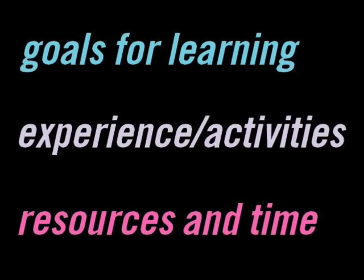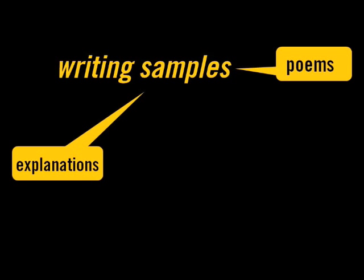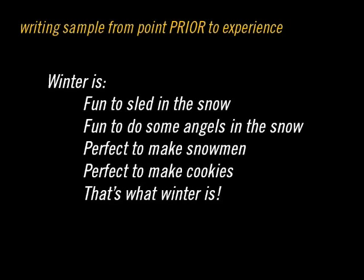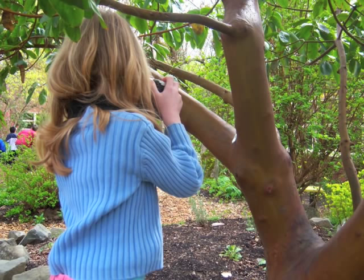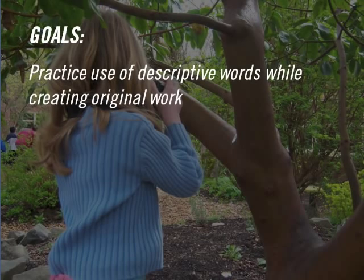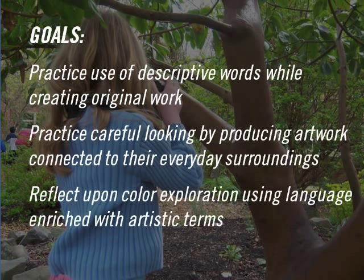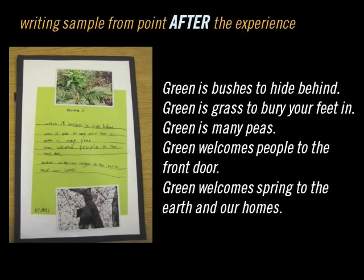Here are some examples of the type of student work that can be collected. Writing samples are good to consider in light of the goals for improving literacy skills. These can be poems, written explanations or directions, creative writing, and so on. This is an example of a writing sample from a point prior to the arts experience — the classroom teacher had students writing poetry about the seasons. A photographer then joined the class to take photographs from various perspectives, like bird's eye view and snake's eye view. Some goals for this residency were that students would practice descriptive words, careful looking, and reflect upon color exploration using language enriched with artistic terms. This is an example of a writing sample from after the experience, once the artist was no longer working in the classroom, but the teacher continued to have students write poetry influenced by the arts experience.